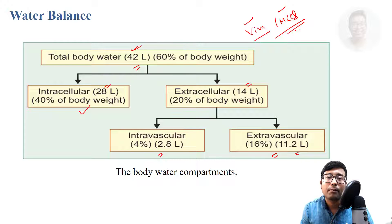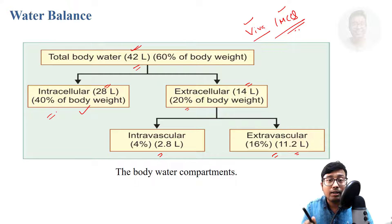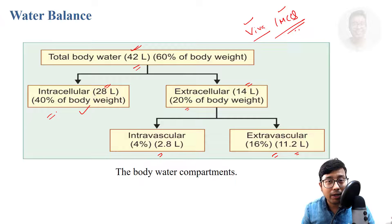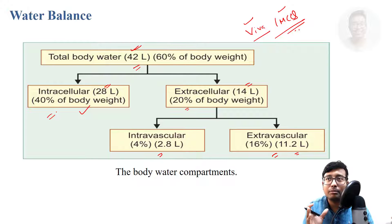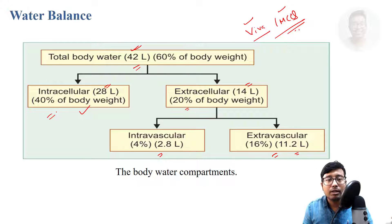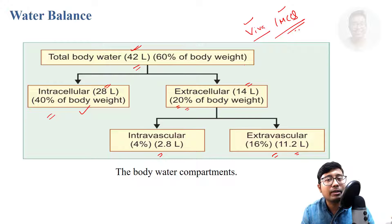The extracellular body water is roughly 20%, not 40% — 40% is the intracellular. This question might be tricky in competitive exams. They may give you the total body weight; a person may be 25 kg or 135 kg, so the total amount will vary. You need to keep in mind the percentage instead of the actual litre value, so that you can manually calculate it.